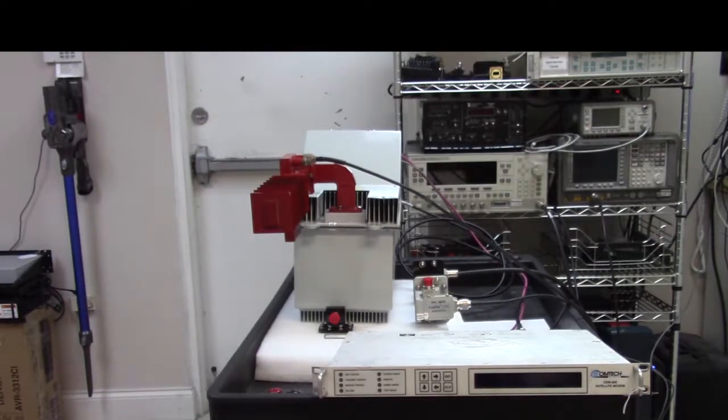The transceiver takes the 70 MHz input, it converts it in this case to C-band, so it does up-conversion, and then it goes to the power section of the transceiver and it's going to output up to 50 watts. Now let's look at the components closely.